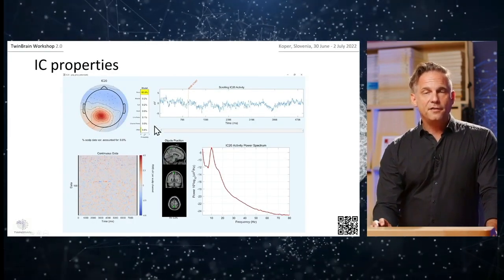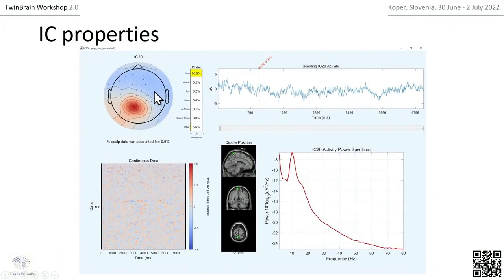ICA gives you several dimensions for each independent component, described in the independent component properties. You get the spatial filter for your IC — that is the scalp map — which reflects how much each independent component's activity contributes to the signal recorded at each sensor. You also get the time course of that IC.